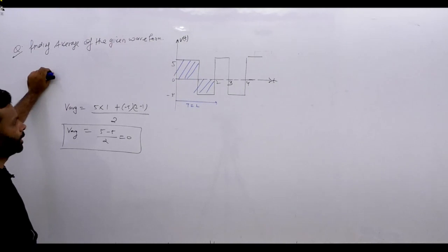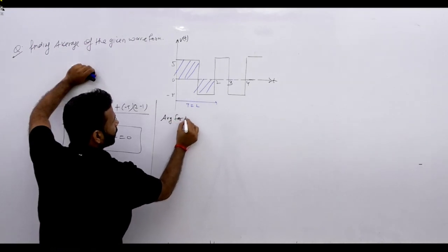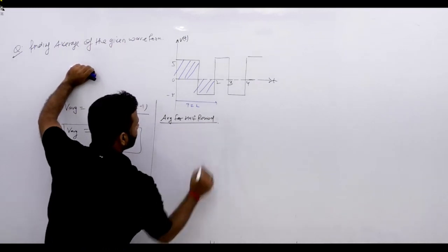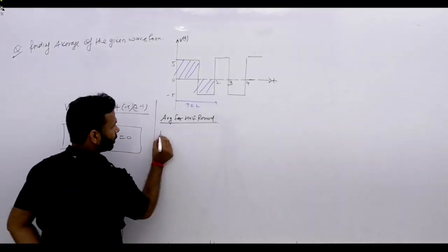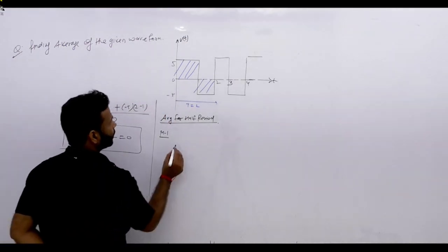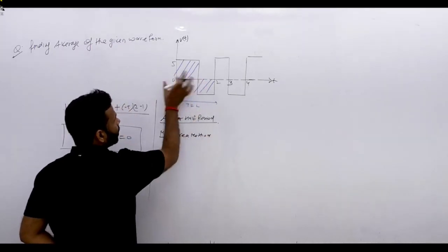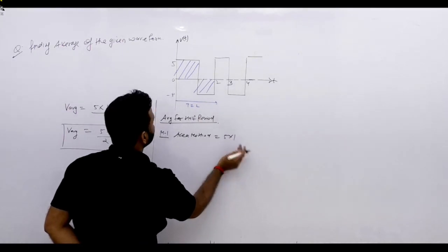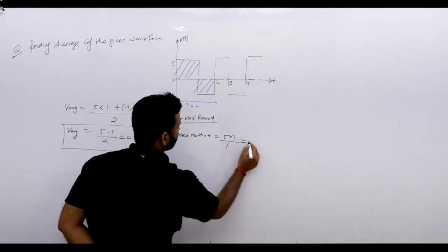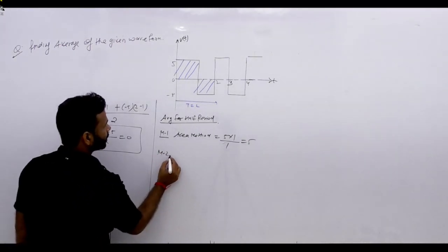Now if you solve the average for the half period using the area method: we have only one area, which is 5 into 1, and the time is 1, so it is 5. Now let's check the conventional approach as Method 2.